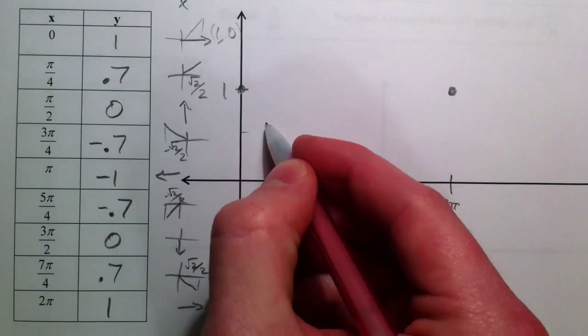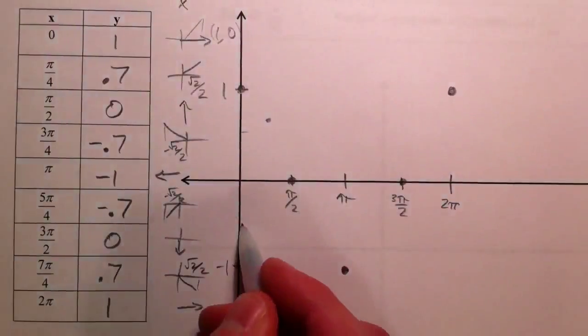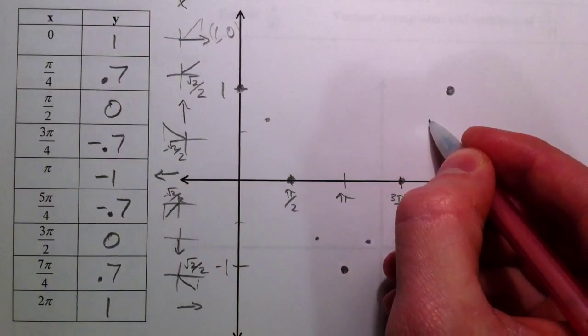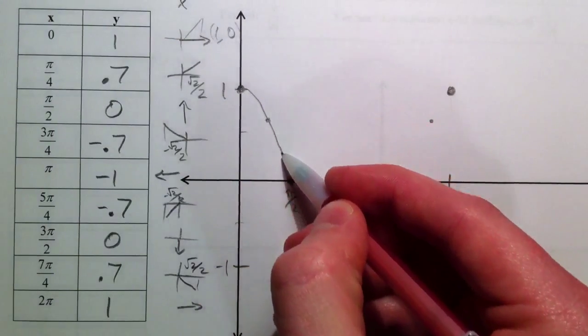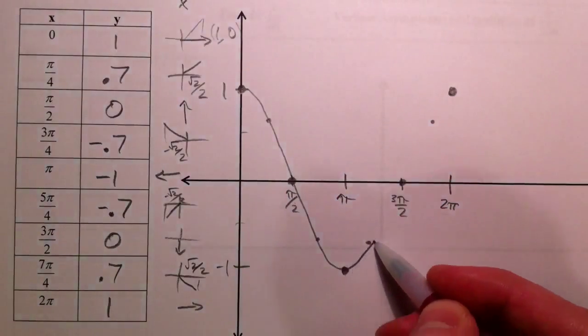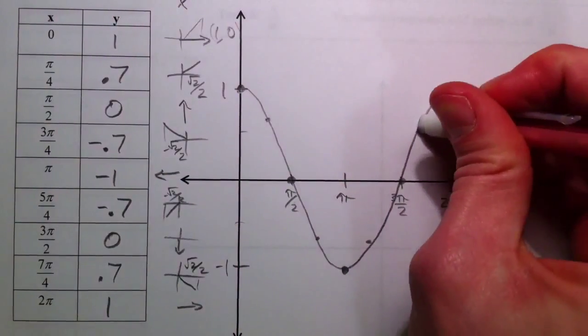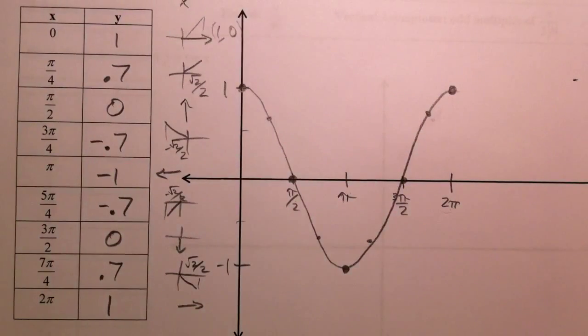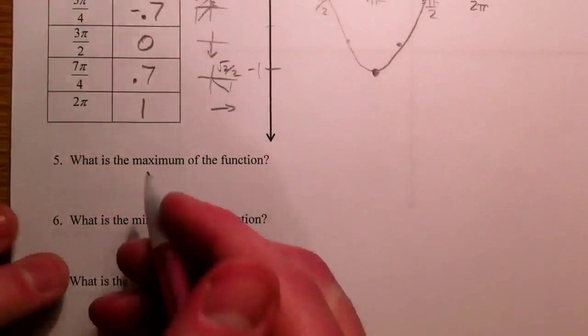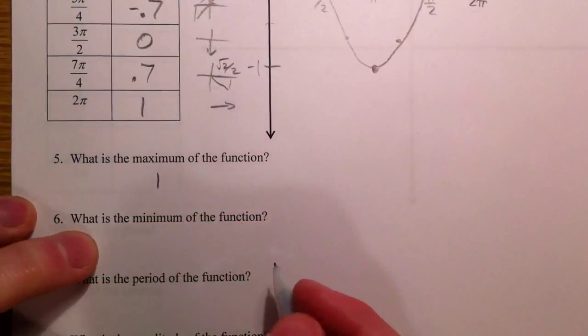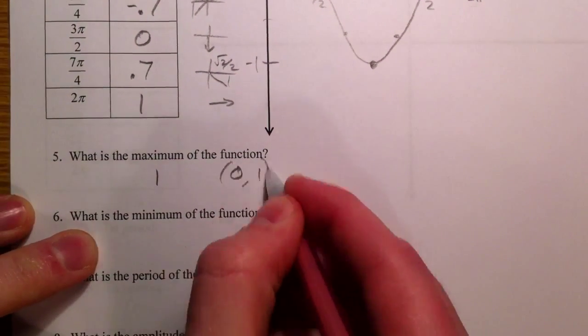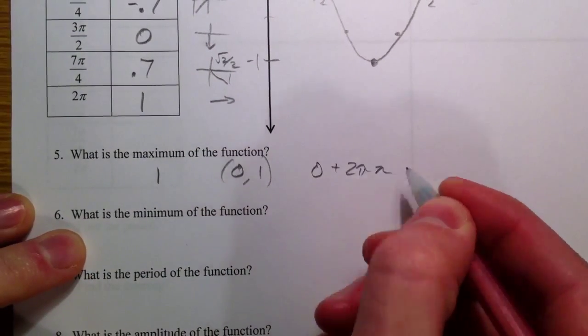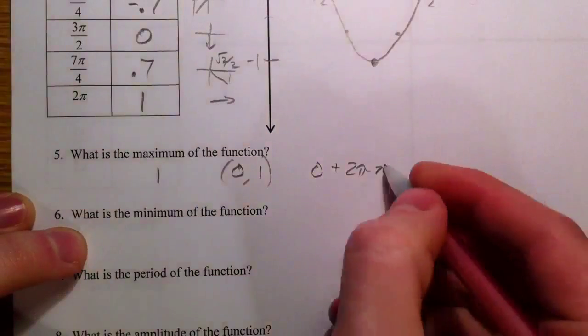And so then 0.7 happened, negative 0.7, and so connect those with a smooth curve. So maximum, still 1. Now the maximum happened at 0. So at 0, plus 2 pi n, just like we were talking about before, where n is an integer.